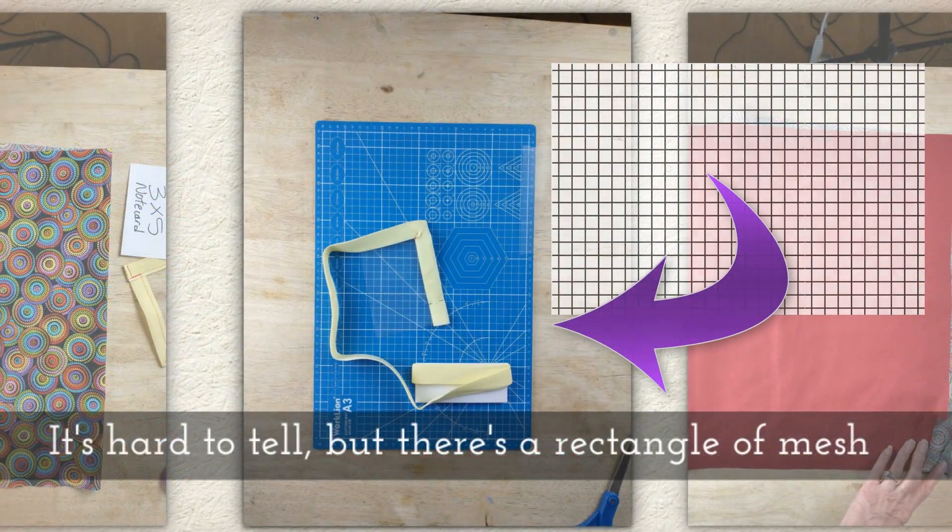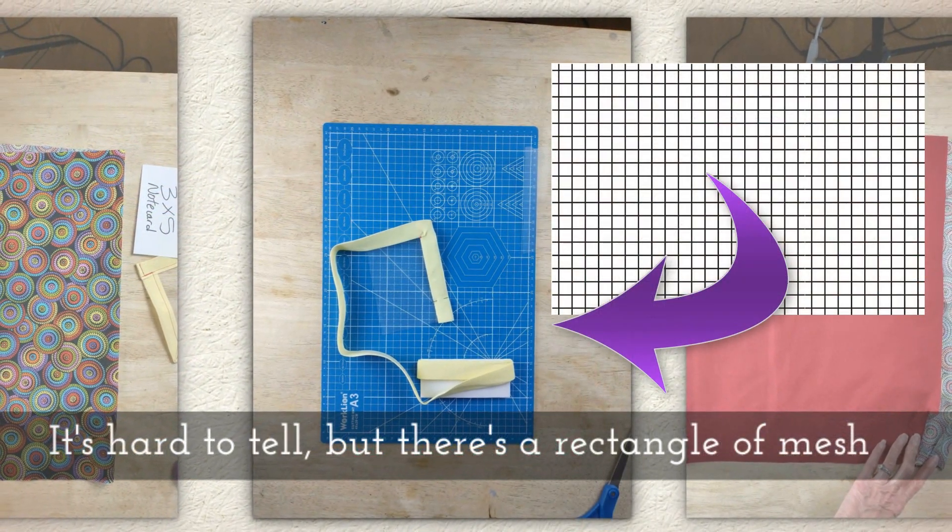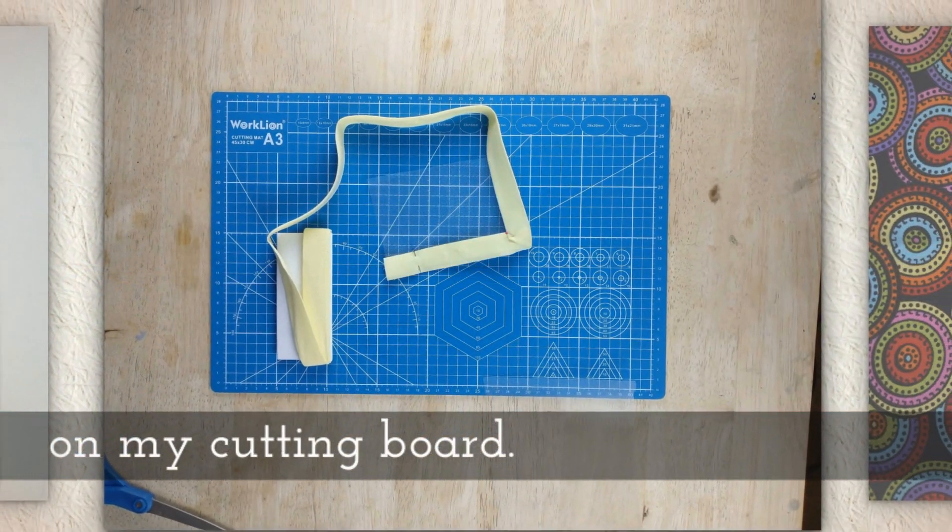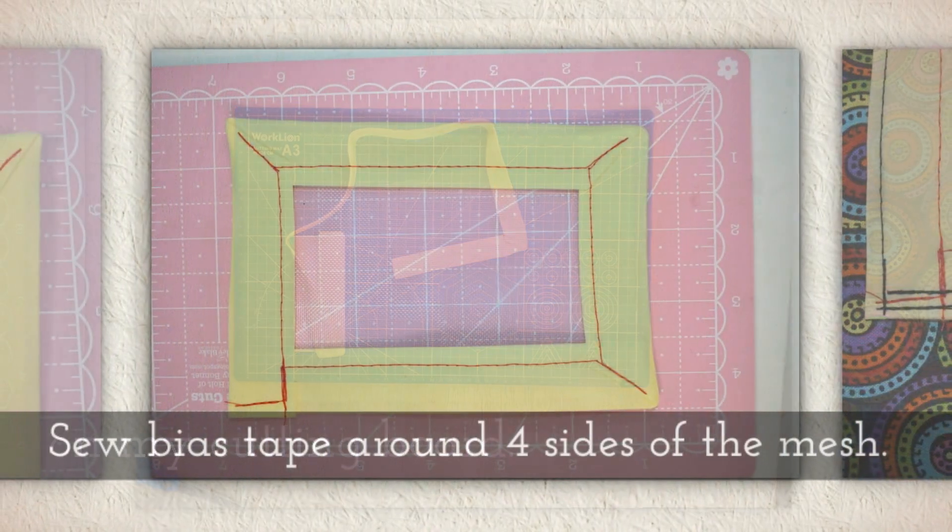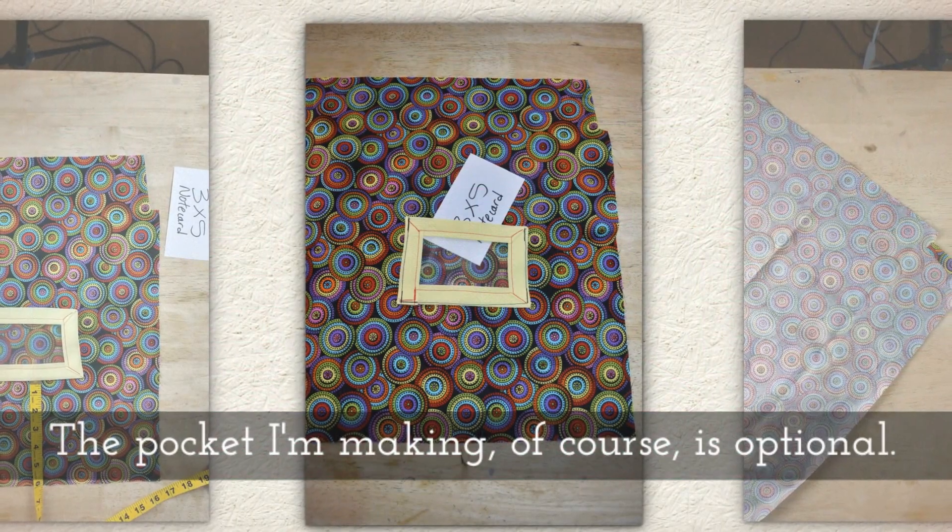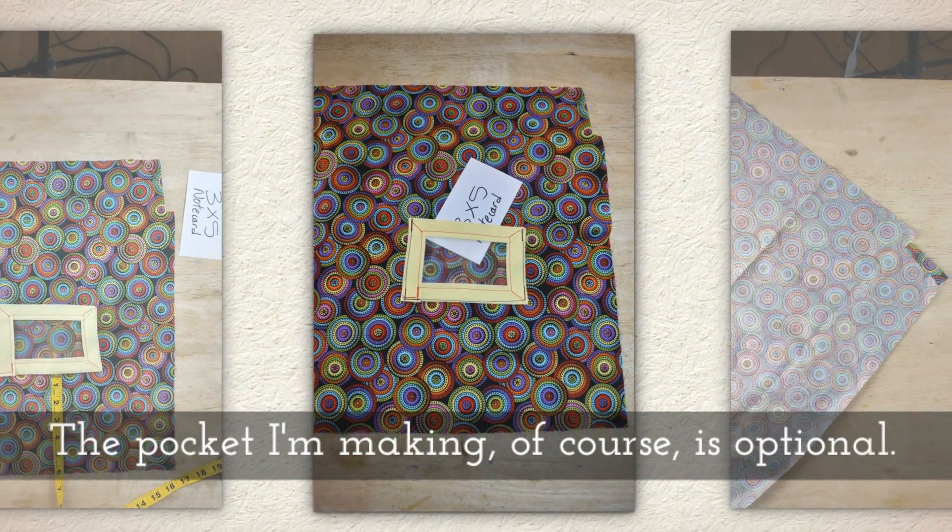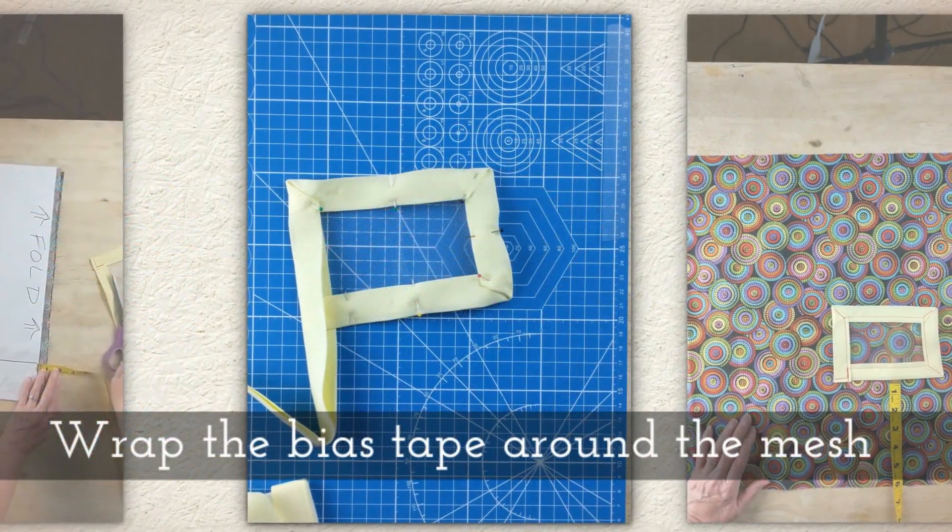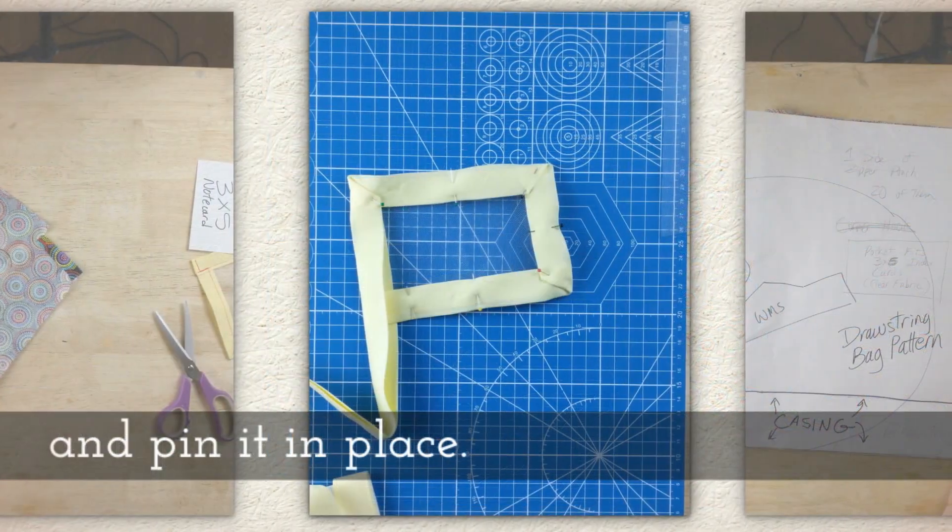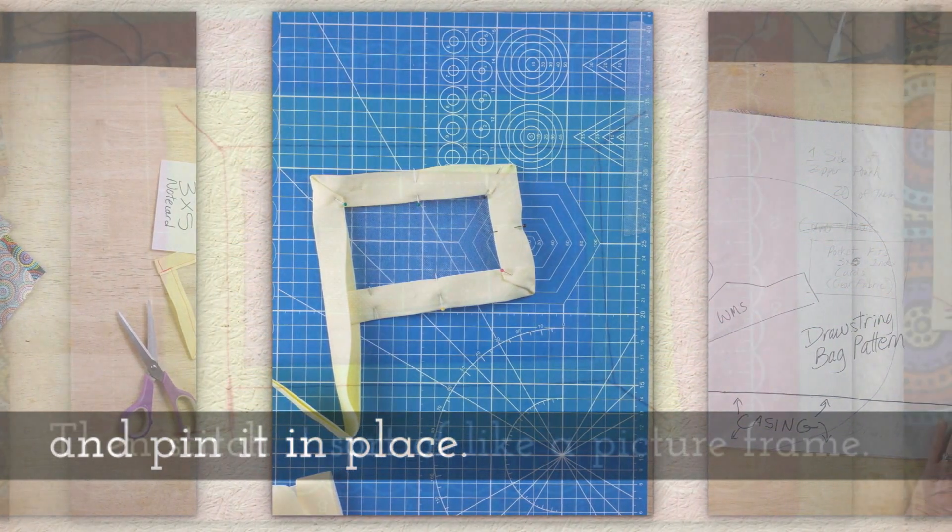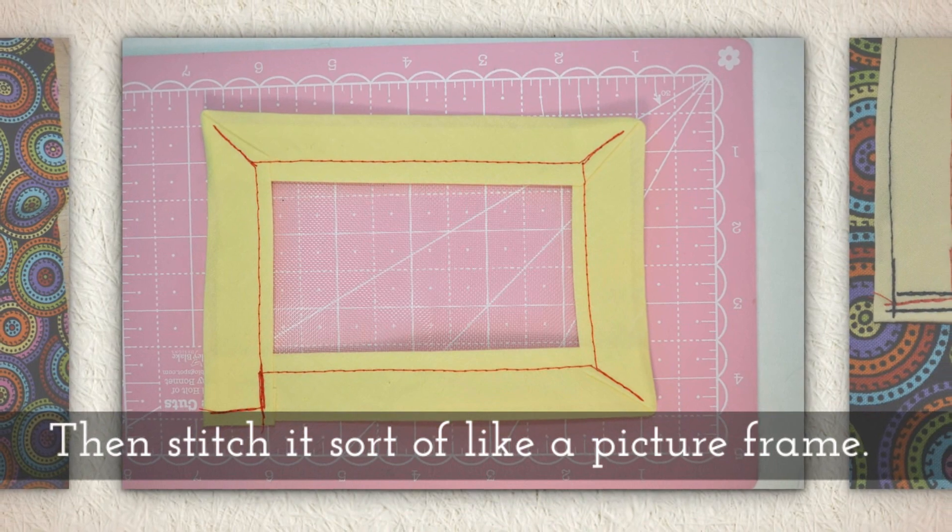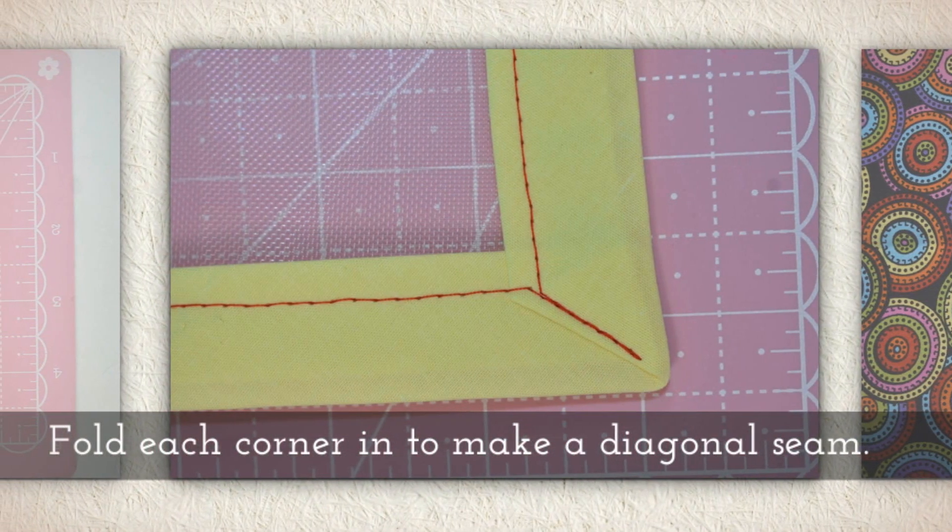Now it's hard to tell, but there is a rectangle of mesh, some see-through mesh, on my cutting board. You're going to sew bias tape around four sides of the mesh. Now the pocket I'm making is optional. Wrap the bias tape around the mesh and pin it in place. Then stitch it sort of like a picture frame.